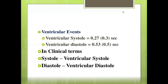At the ventricular level, ventricular systole is 0.3 seconds and ventricular diastole is 0.5 seconds. Atrial systole and ventricular diastole occur simultaneously. The ventricular events include ventricular systole and ventricular diastole.